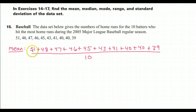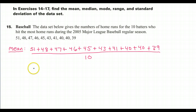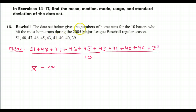The mean is what you get when you add up all of the numbers and divide by how many numbers you have. The symbol for mean is x-bar, and in this case the mean turns out to be 44.